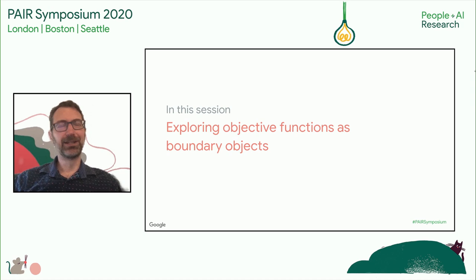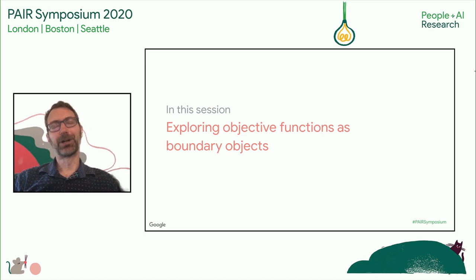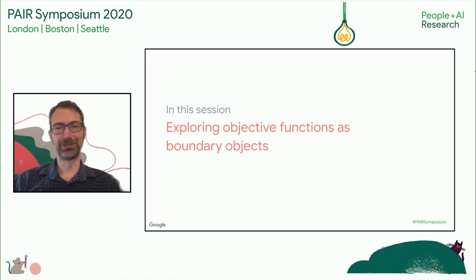In this session, there are many types of boundary objects. We heard in the previous London session about data as a boundary object. What I'd like to talk about in this section, and what our speakers will discuss, is objective functions as boundary objects. I think this is a critical concept. Let's talk about what we mean by an objective function.